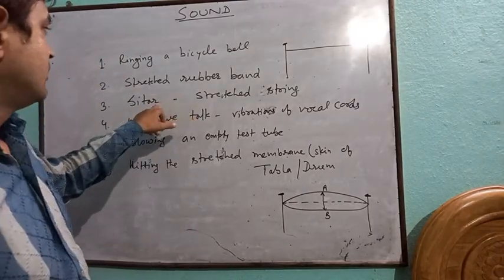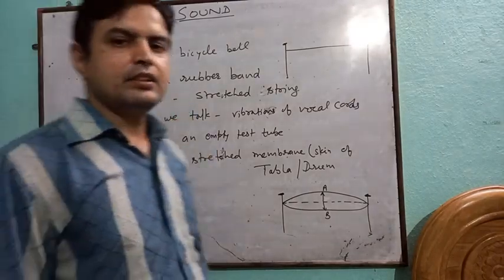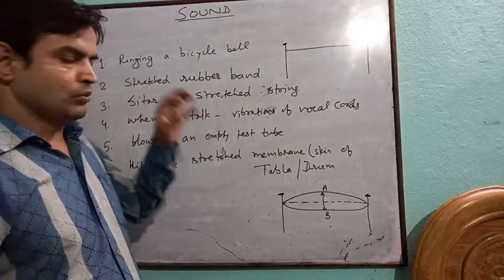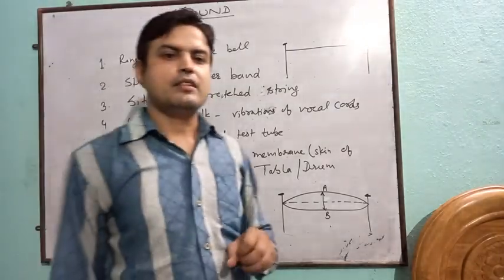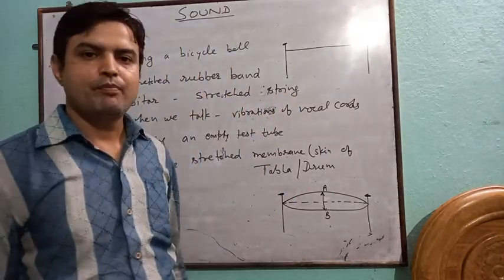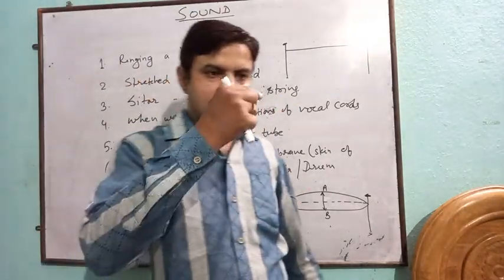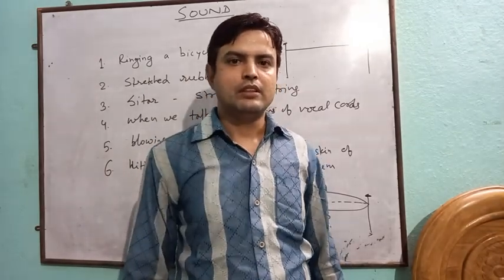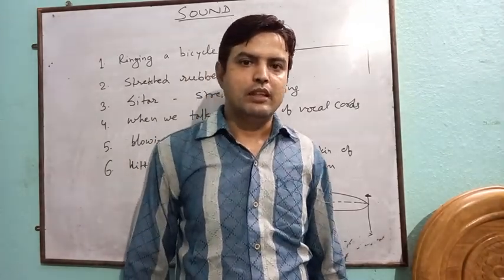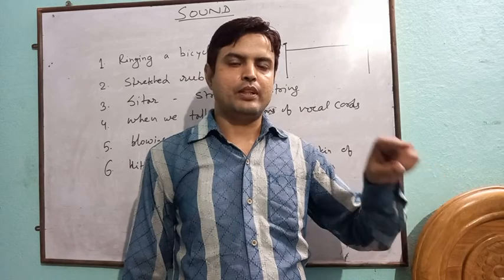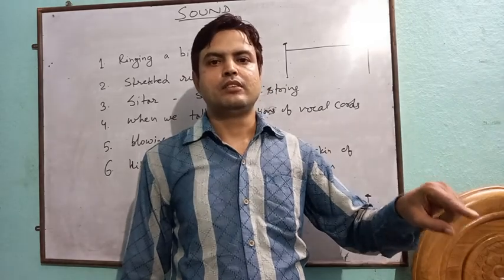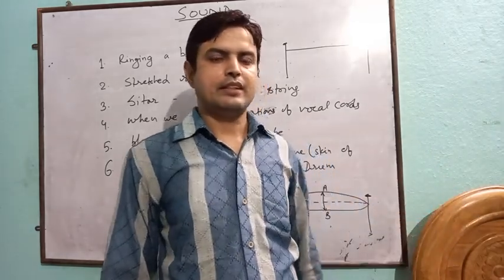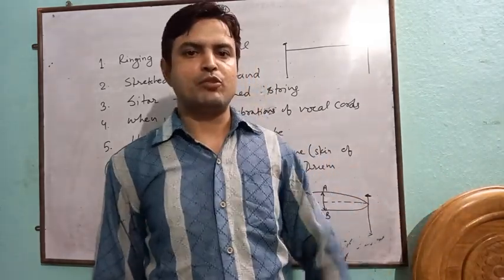Next example: sitar. Sitar is a musical instrument which has a stressed string. When we pluck the strings, it produces sound. When we touch it gently, we can feel its vibration — its shaking movement.